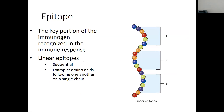Epitopes are the key portion of an antigen recognized in the immune response. An antigen can be humongous, but there's one select portion that the immune system keys in on — the thing that makes it most antigenic. It might be a sequence of the protein or markers sticking out of membranes.